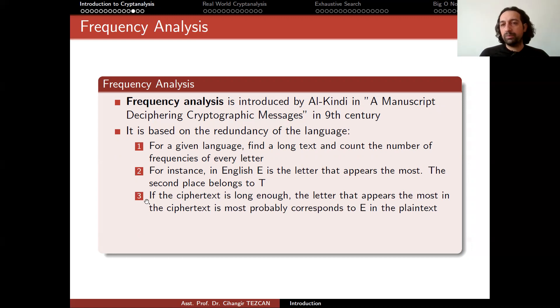Then if the ciphertext you captured is long enough, you also count the number of appearances of every letter in the ciphertext. And the letter that appears in the ciphertext most will most probably correspond to E in the plaintext. So you replace it by E. So that is the idea.